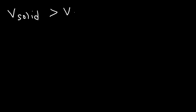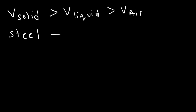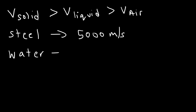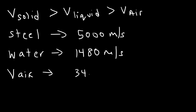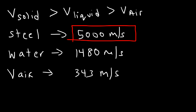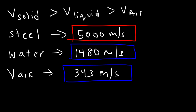Let's review what we've covered. The speed of sound in a solid is greater than in a liquid, which is greater than in air or a gas. In steel, the speed was about 5,000 meters per second; in liquid water, roughly 1,480 meters per second; and in air at 20°C, 343 meters per second. Sound travels a lot faster in a solid than in a liquid or in air.